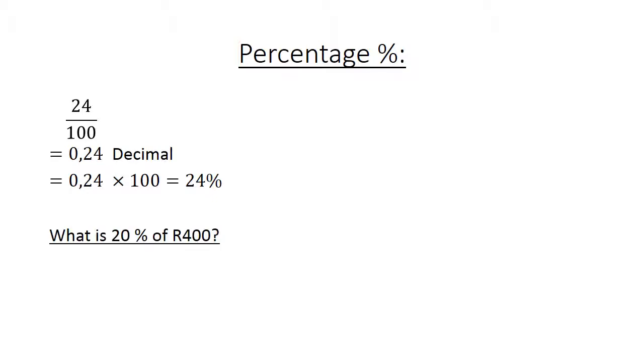What is 20% of 400? 20% is 20 over 100 times 400, which equals 80 rand.